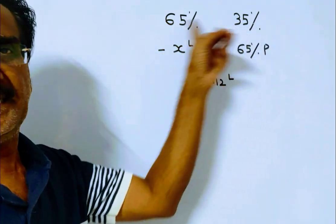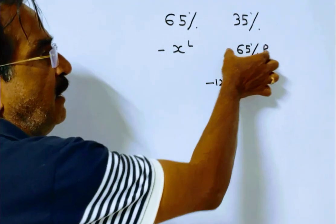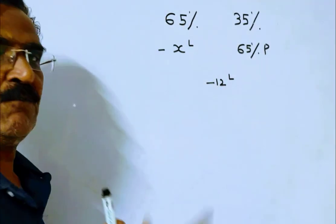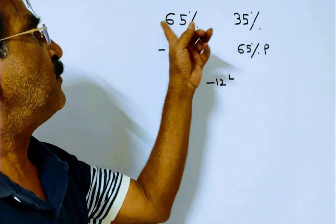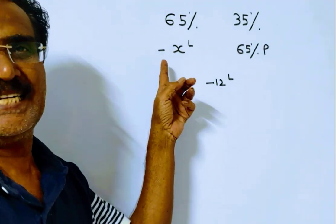Here we know the quantities. What is the rule of allegation? This minus this upon this minus this is equal to quantities ratio, 65 is to 35. I have put a minus sign because there is x percent loss.